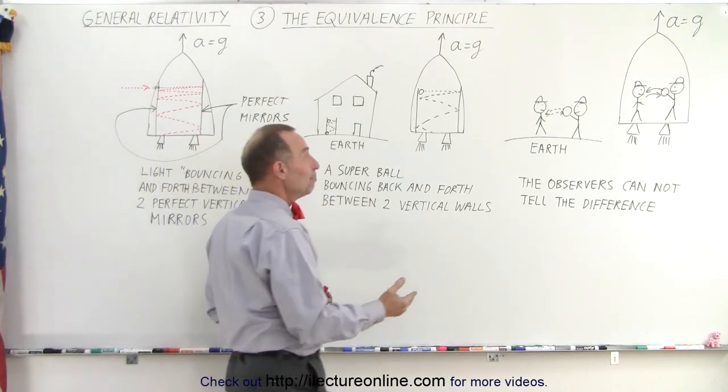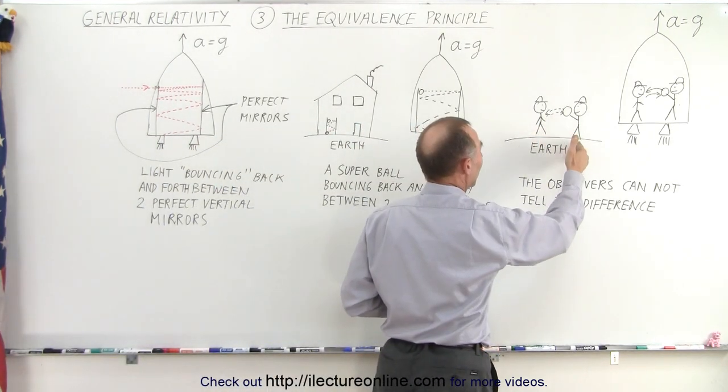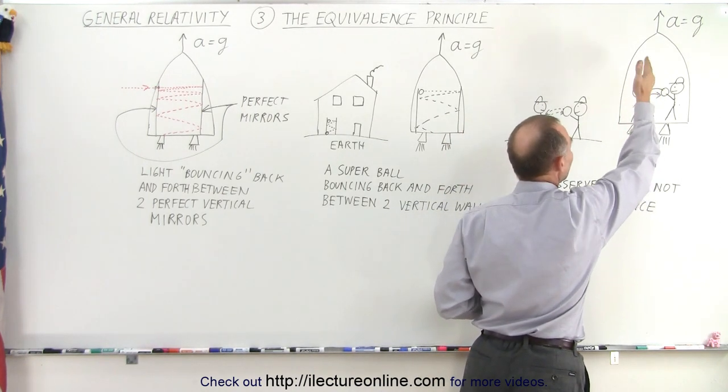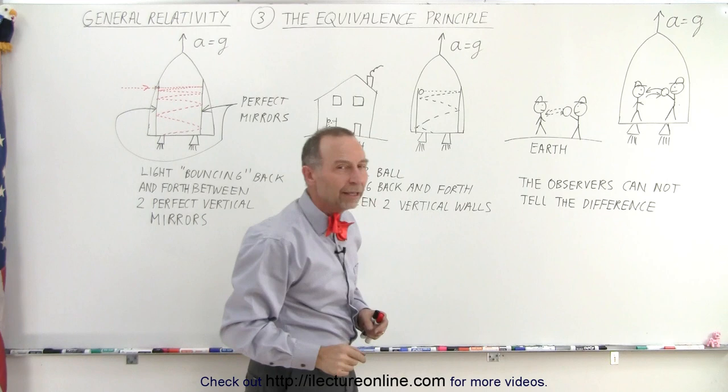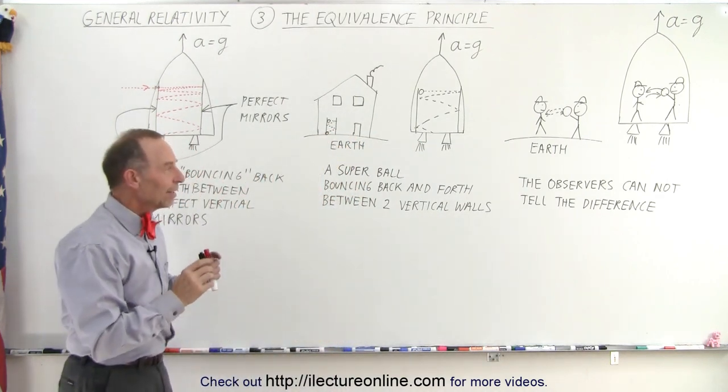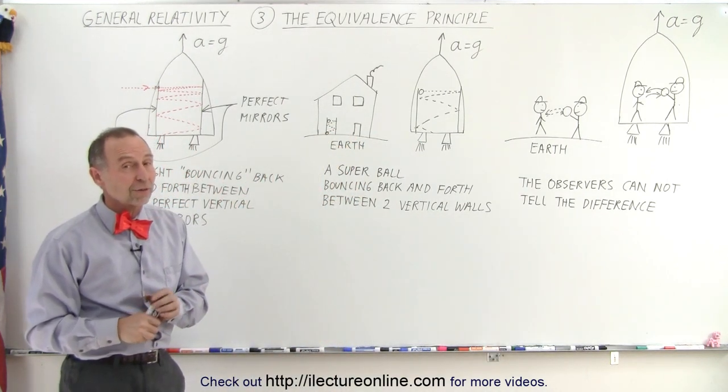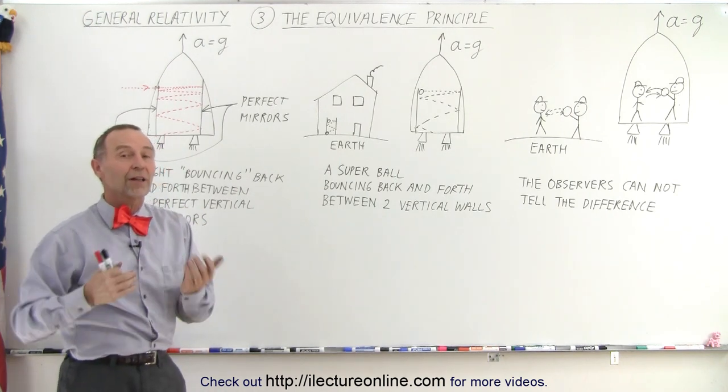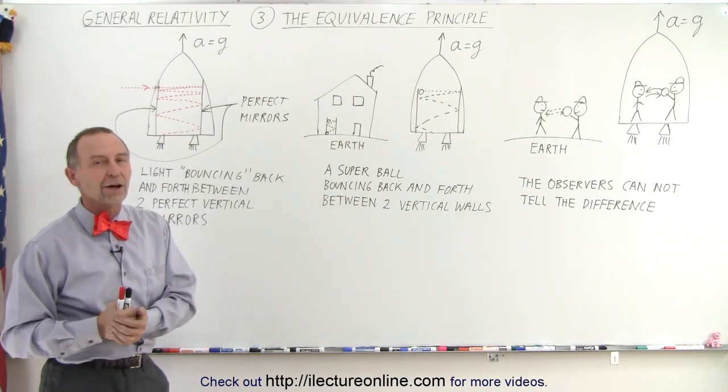And there's no difference in being on the earth where the acceleration of gravity is equal to g, or being in a spaceship that creates the essence, the acceleration equal to g. And because of that, he had a very different way of looking at the concept of gravity. And this was, in essence, the birth of the concept of the general theory of relativity.